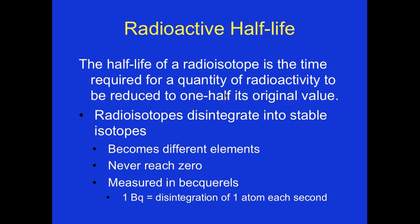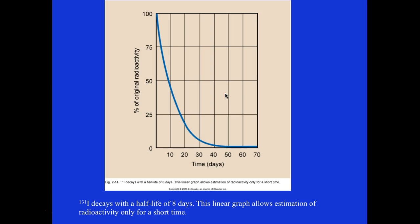Radioactive half-life: the half-life of a radioisotope is the time required for the quantity of radioactivity to be reduced to one half of its original value. Radioisotopes disintegrate into stable isotopes, becoming different elements in the process. They never reach zero and are measured in becquerels — one becquerel equals one disintegration of one atom per second. Iodine-131 decays with a half-life of eight days and is used for scanning in nuclear medicine. A linear graph shows estimated radioactivity: at 100% starting, you reach 50% at about eight days.